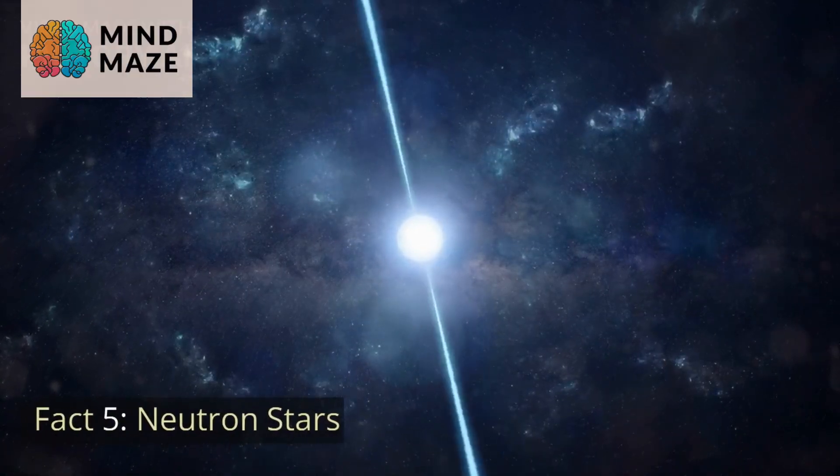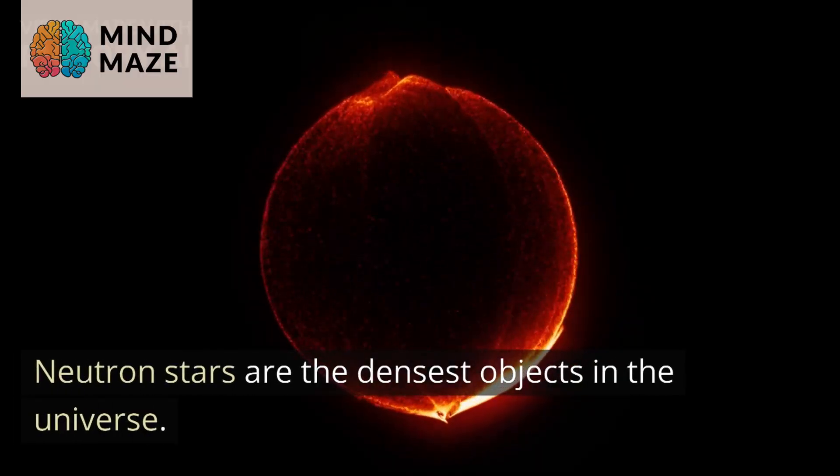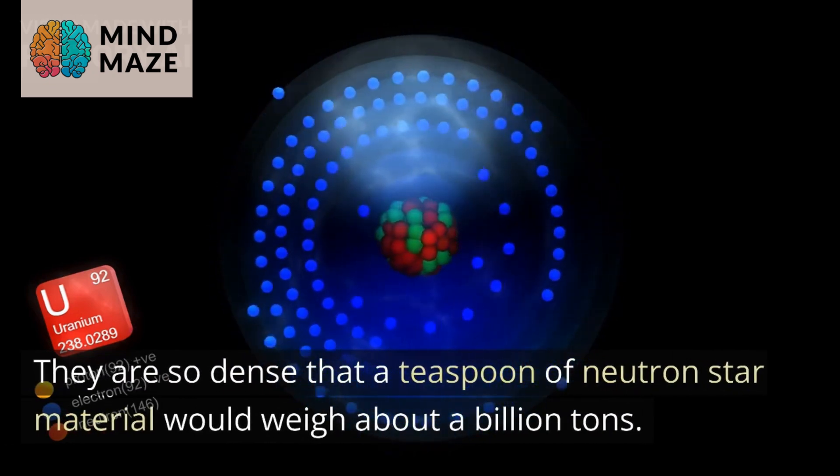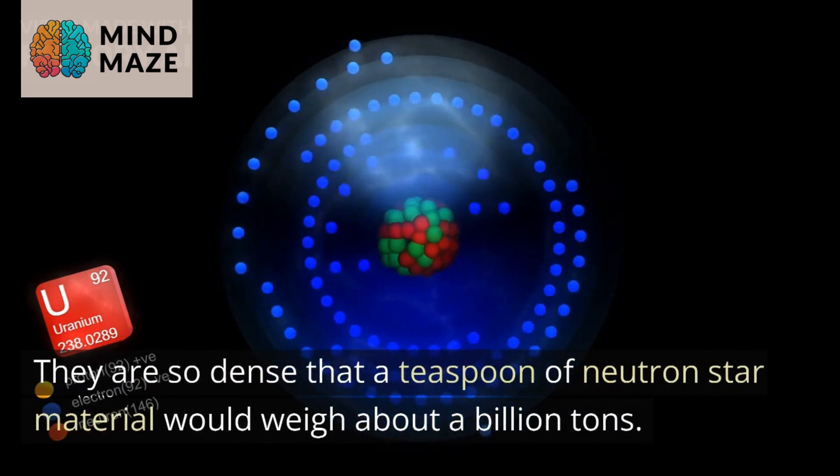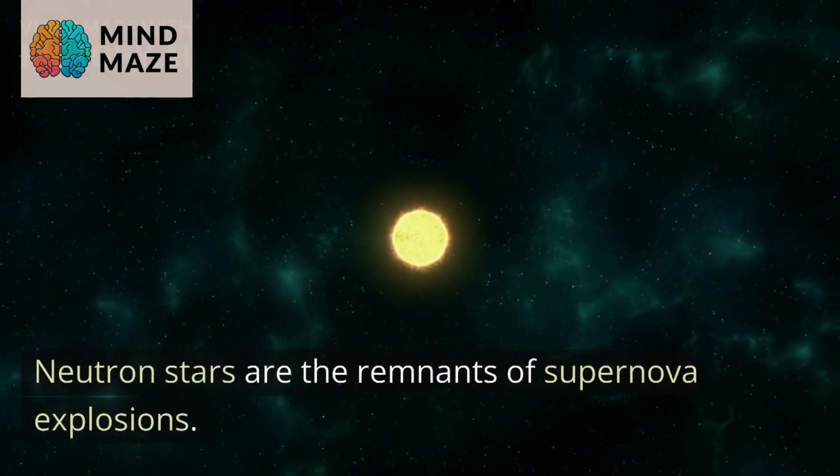Fact five: Neutron stars. Neutron stars are the densest objects in the universe. They are so dense that a teaspoon of neutron star material would weigh about a billion tons. Neutron stars are the remnants of supernova explosions.